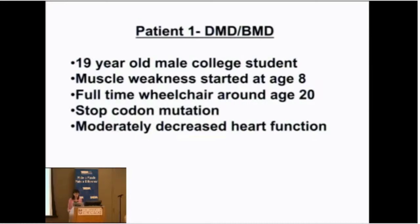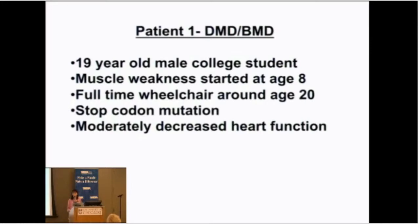This is a patient who carries a diagnosis of DMD/BMD — a 19-year-old when I first met him, now in his later 20s, who was in college at the time. His muscle weakness started at age eight, and he started full-time wheelchair use around age 20 — later than typical for a Duchenne patient. He had a stop codon mutation and already had moderately decreased heart function. The way we talk about heart function is in terms of ejection fraction: normally the heart kicks out about 60% of the blood inside it each beat. His ejection fraction had drifted down into the very low 30s and high 20s.